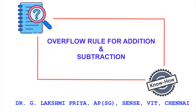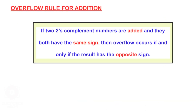Welcome to the next video on the Know-How series, which covers the overflow rule for addition and subtraction. The overflow rule for addition states: if two two's complement numbers are added and they both have the same sign, then overflow occurs if and only if the result has the opposite sign.